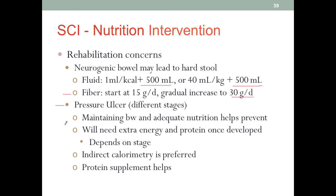Studies indicate that SCI patients who can maintain their body weight and adequate nutrition can help reduce the risk for pressure ulcers. We need to assess exactly what stage the pressure ulcer is so we know what we're dealing with, since specific requirements differ stage by stage. We use indirect calorimetry to estimate energy needs, especially for stage 3 and stage 4 pressure ulcers, where protein supplements help, along with additional micronutrient supplementation per wound protocols.